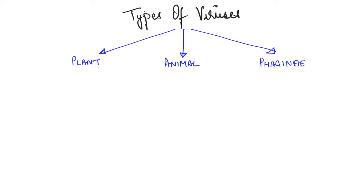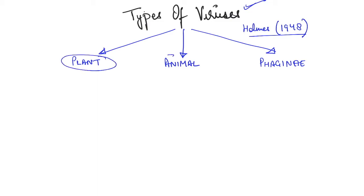Today's video is all about types of viruses. Types of viruses was basically given by Holmes in the year 1948. He divided viruses into three different types on the basis of the host that they occur in. These three types are plant, animal, and phaginae viruses.